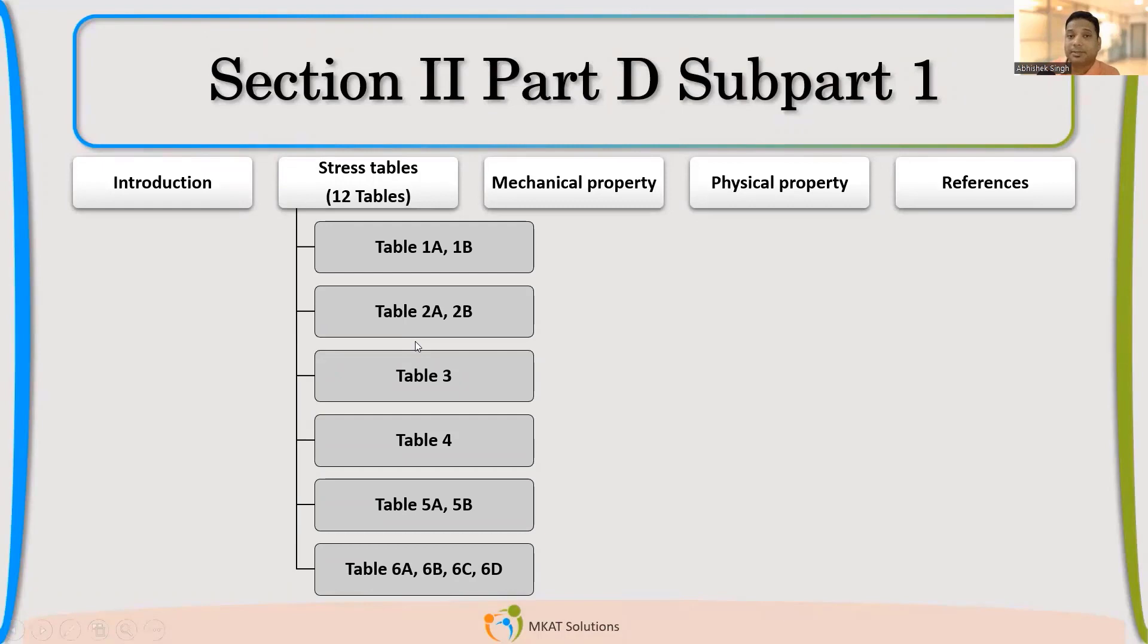Not only one stress table, there are several tables applicable here. I will just ask one question. Why do you think there are several tables? Why not a single table? Anybody would like to respond? If you want to respond, just write in the chat box why do you think there are several tables? Why not a single table? Finally, what we need is the mechanical properties of the material like yield, tensile, allowable stresses.